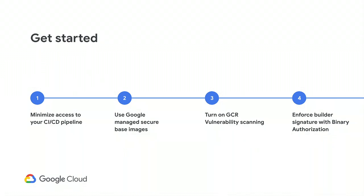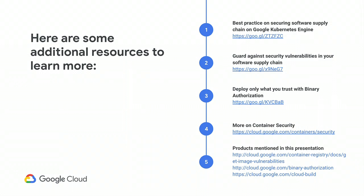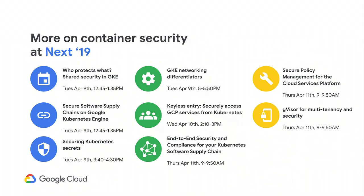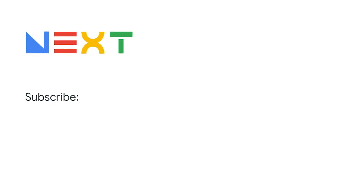Last, enforce a builder signature with Binary Authorization. This is the simplest deploy policy you can have — make sure the image you deploy is actually built by you. Here are some additional resources to learn more about the tools and best practices discussed today. The slides will be online after the presentation, and there are additional container security talks at Next you can check out over the next two days.